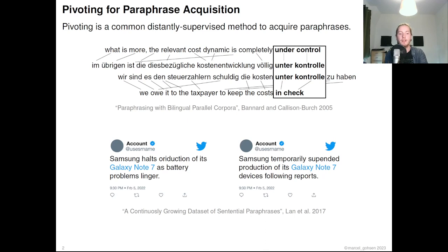Distantly supervised acquisition methods usually achieve better scaling. One common method is pivoting, which in terms of paraphrasing means to use a pivot medium to find equivalent texts. This method was proposed by Bennett and Callison Birch, who used parallel corpora to find phrases that are translated into the same phrase in a pivot language. Similarly, Lan et al. used URLs and tweets to identify semantically equivalent texts.